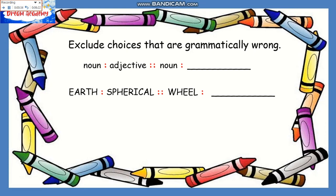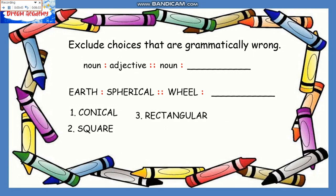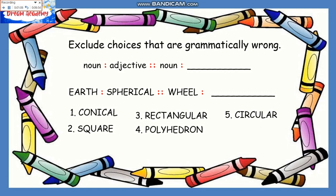The second word in the first pair is an adjective. Therefore, the fourth word must also be an adjective. If you see a choice that is not an adjective, it must be wrong. Number three is not an adjective — it's wrong. Number four is not an adjective — it's wrong. We are left with one, three, and five. But knowing wheels, they are not conical in shape. They are not rectangular. They are circular in shape. So our answer is circular.